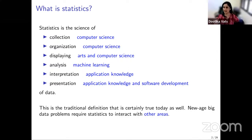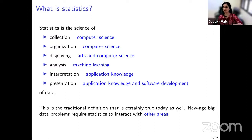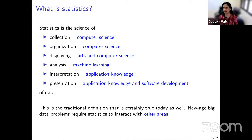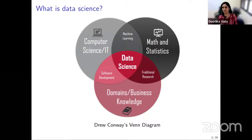All of that said: before the computer, statistics had a very good identity of its own. After the computer, there's now a blurry line between statistics and data science, because all of this — when you do it for the modern era — is basically data science. So the question is: where did statistics end and where does data science begin?